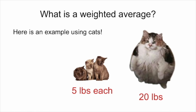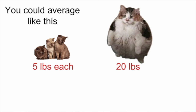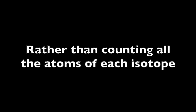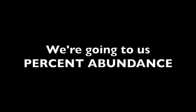Let's give some examples of how we calculate a weighted average. We're going to do this using cats. We have three kittens that weigh five pounds each, and one big 20-pound cat. To calculate our average, we take five plus five plus five plus 20, divide by four, and get 8.75 pounds. When dealing with really large numbers like isotopes, it's not practical to count all atoms, so we use something called percent abundance.